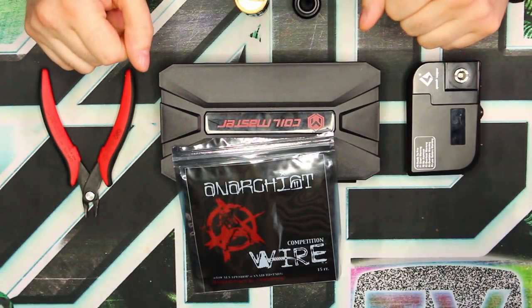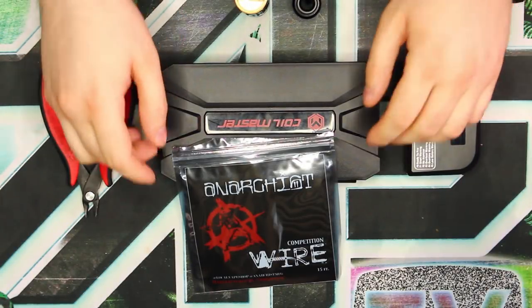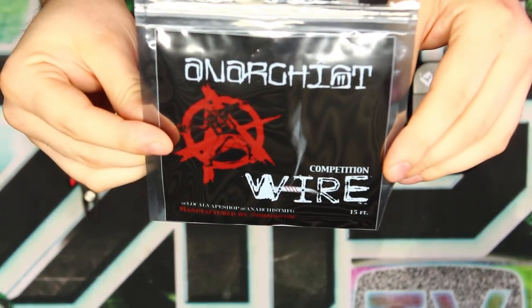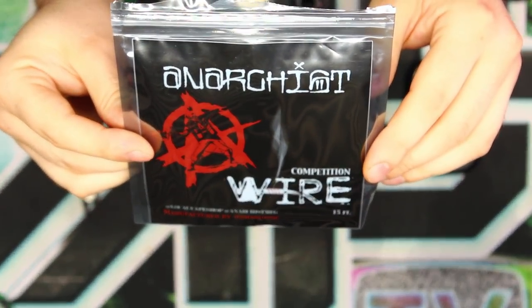Grab your mod, your wick, your Addy, your wire, your juice, all that good stuff. Let's go down to the close-up view and build it up. Alright guys, so here's the stuff that we're gonna need for today's video. We've got our wire that we're gonna be using today, which is Anarchist Nichrome 80 21 gauge.